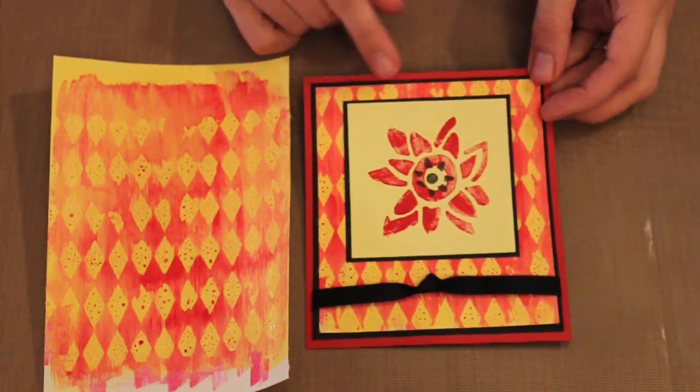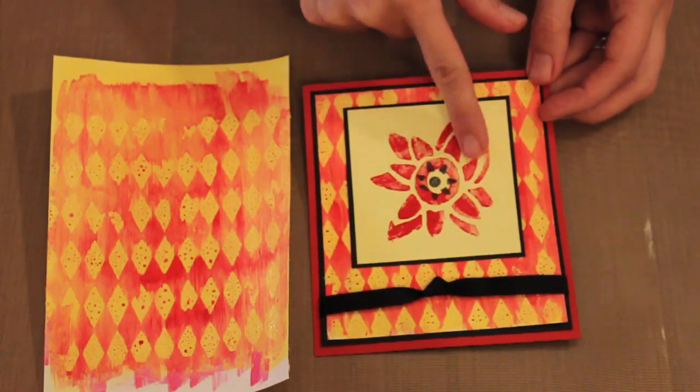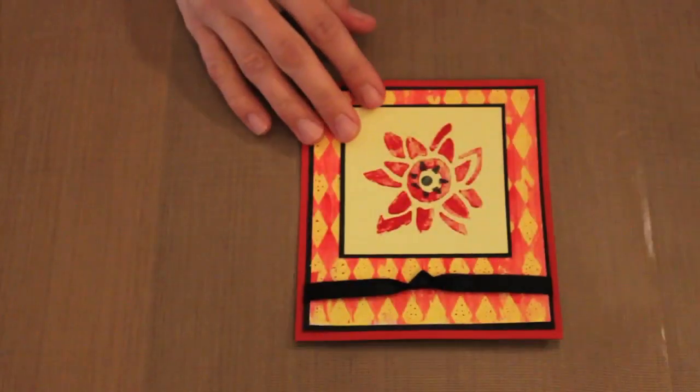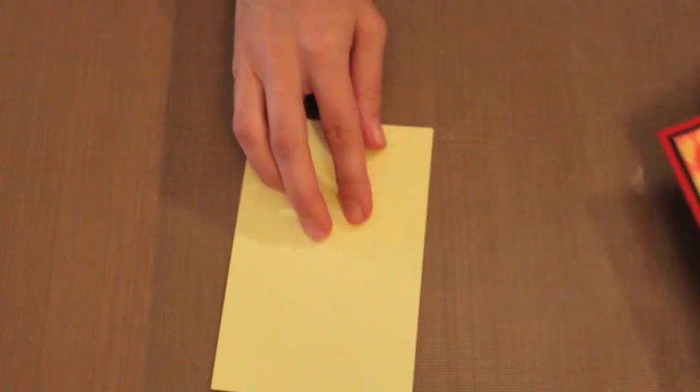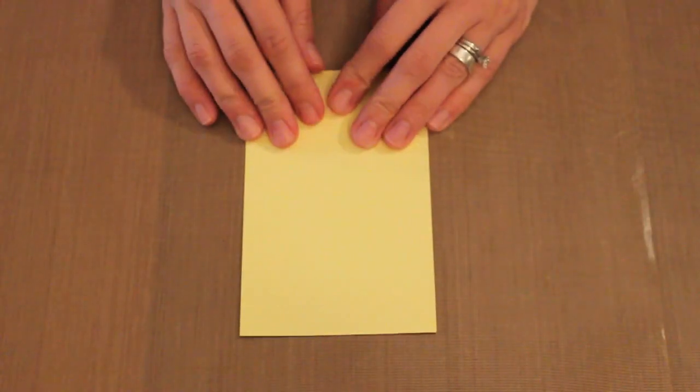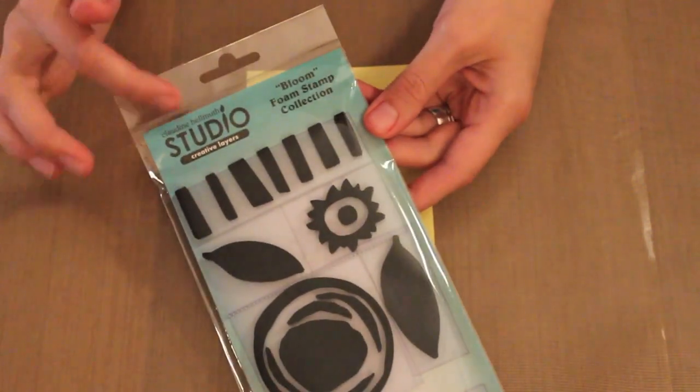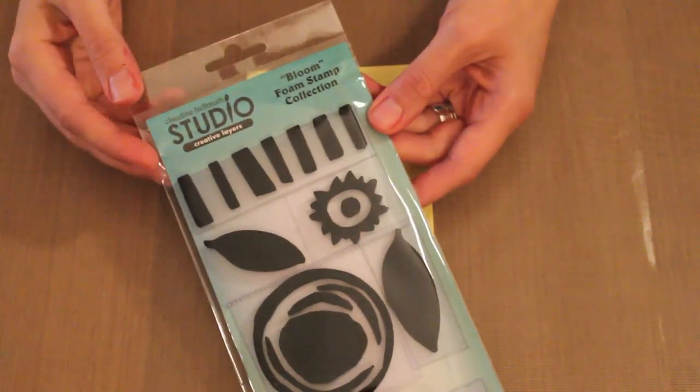I wanted to also show you this center focal stamped image. Let me move aside my background and card and bring in a piece of yellow cardstock. I'm going to stamp the focal on here.